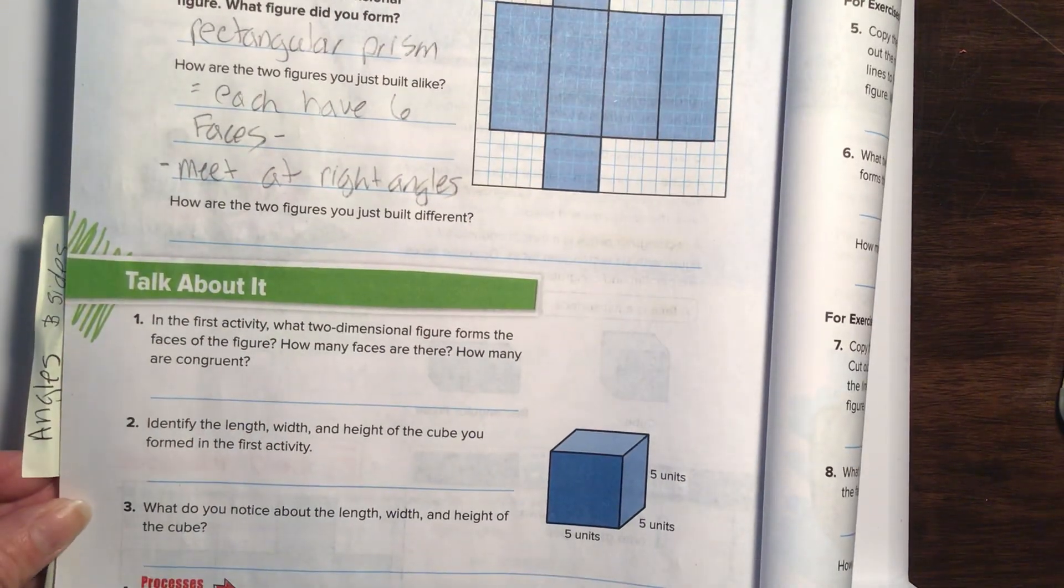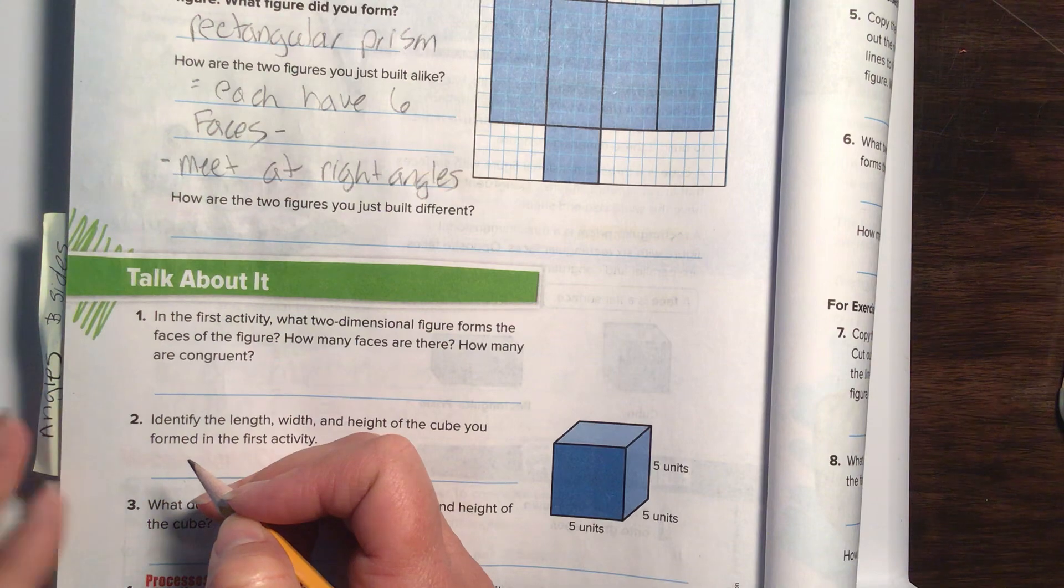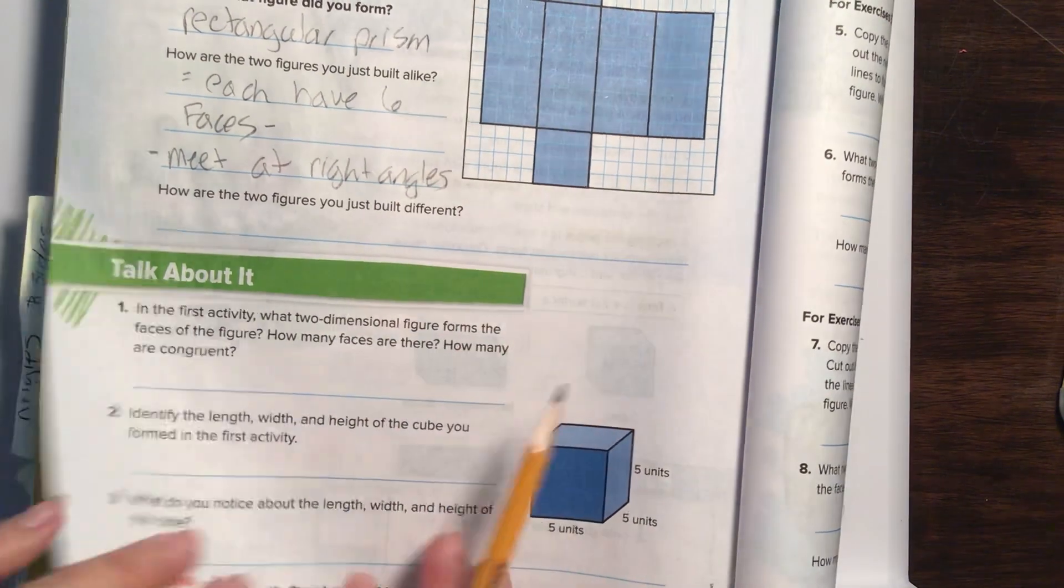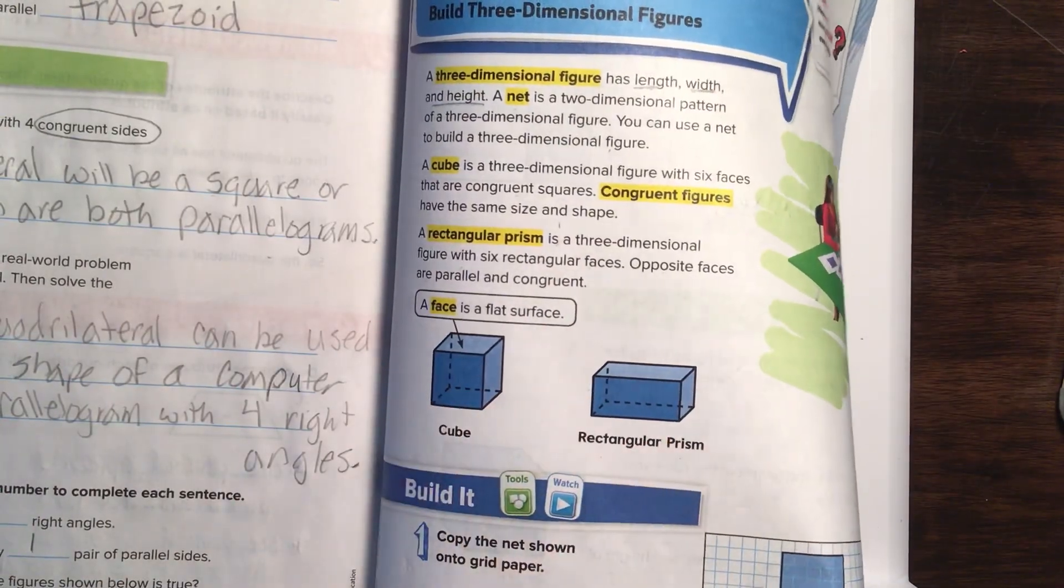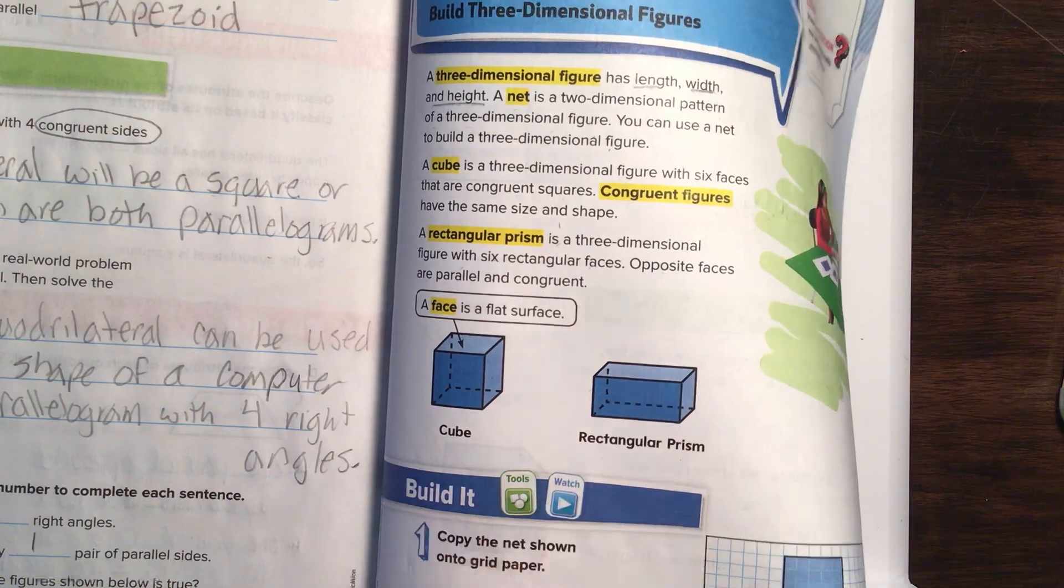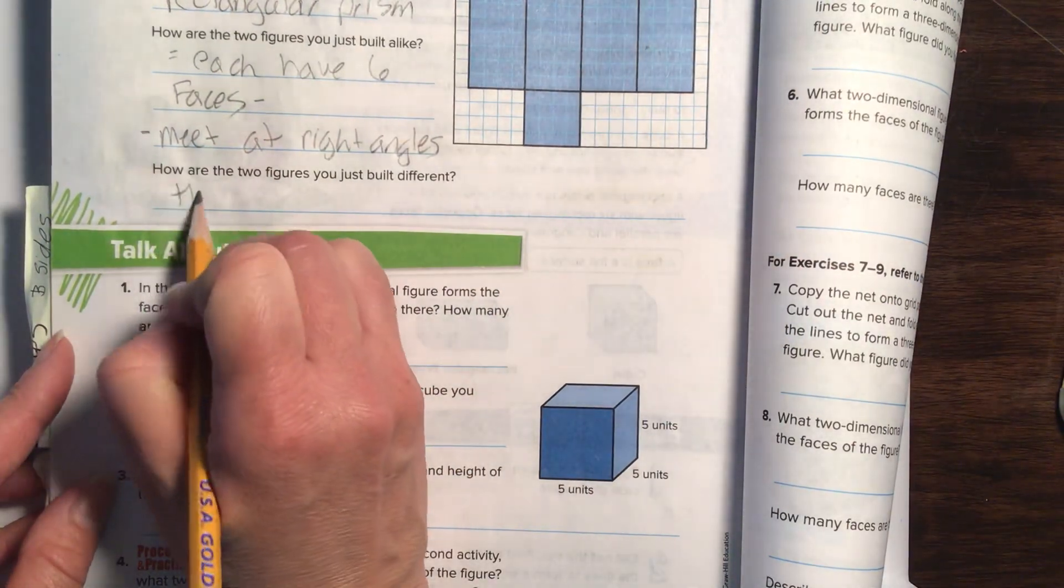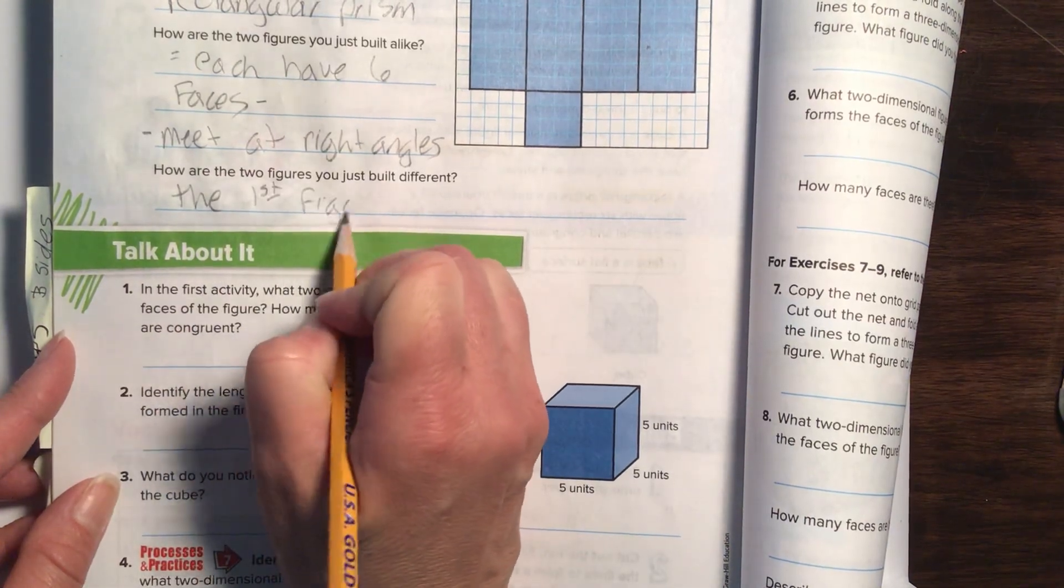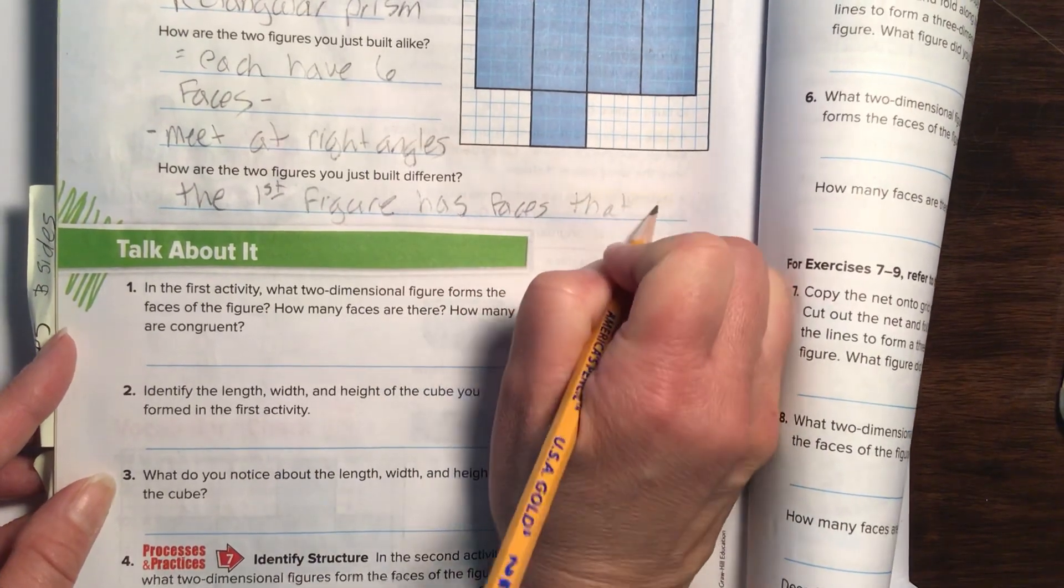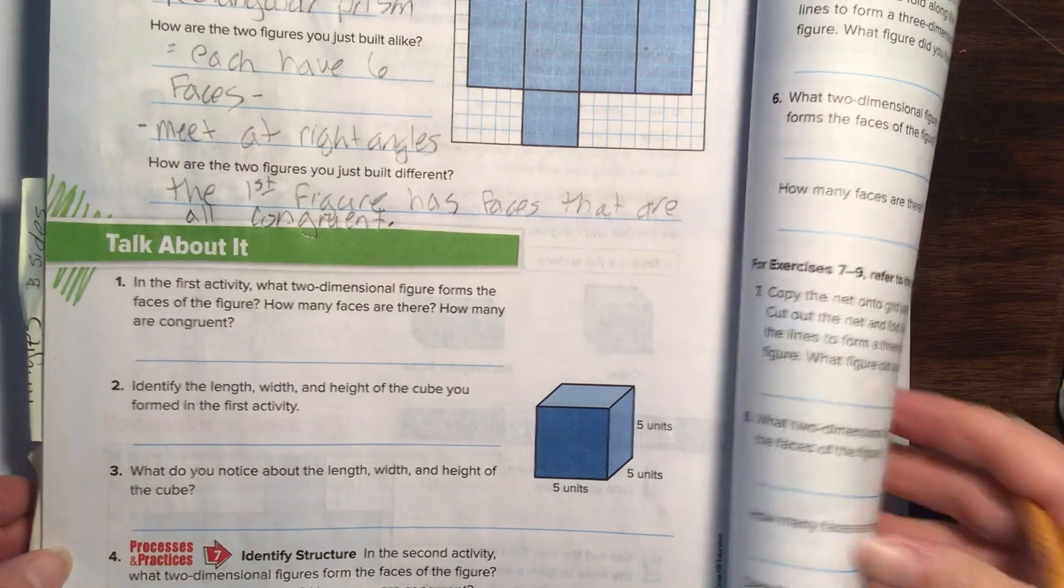How are the two figures you built different? The rectangular prism doesn't have all of the faces absolutely congruent because these ones are longer. These are all congruent, which means they're all the same size, all of the faces. While this one, they have some longer faces that go along the body parts. So the two figures are different because the first figure has faces that are all congruent.